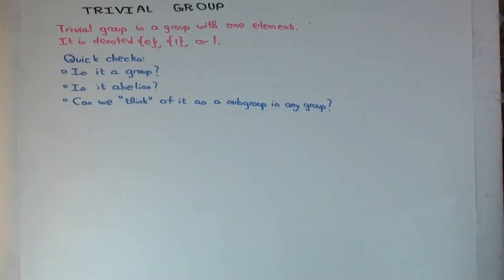Okay, so in this talk I'm going to introduce a particular group which is called the trivial group. This is a group with one element. Now, can you have a group with zero elements?